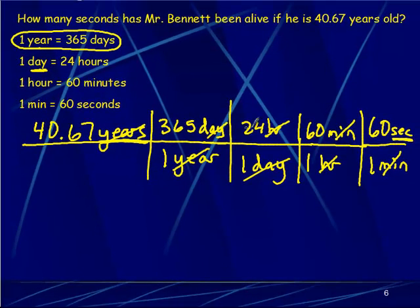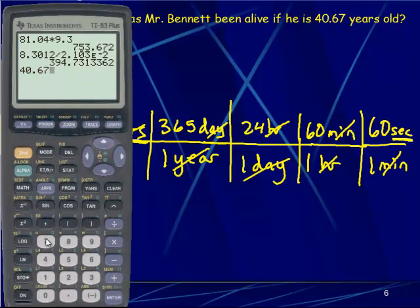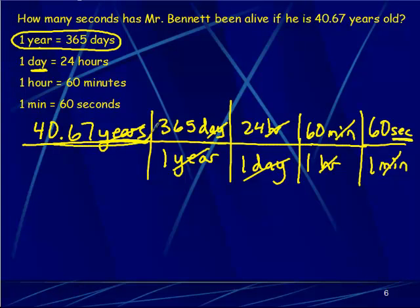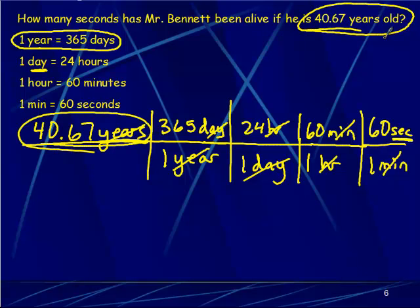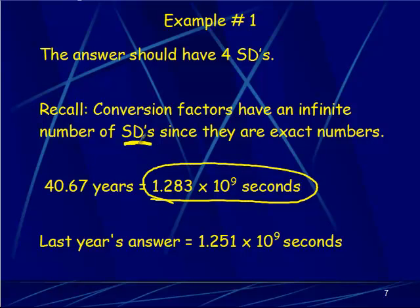To solve the problem, you multiply right across the top, multiply right across the bottom, and then divide those two answers. There are all ones across the bottom here, so I'm going to multiply: 40.67 times 365 times 24 times 60 times 60. We need to focus on significant digits — always go back to the original number in the problem. That number has four significant figures, so I round the answer to four: 1.283 times 10 to the 9th seconds. Conversion factors are considered to have infinite significant digits, so we don't count the 1 day, 24 hours, 60 minutes, etc.